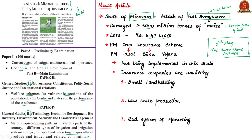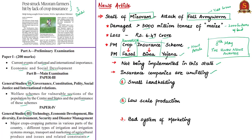Today we shall focus on Pradhan Mantri Fasal Bima Yojana. The farmers of Mizoram have not been covered under the Prime Minister crop insurance scheme. Had they been covered, they would have been able to mitigate their financial risks. In Hindi, 'Fasal' means harvesting of crops and 'Bima' means insurance. The article states that the scheme is not being implemented in Mizoram since insurance companies are unwilling to participate for the state. The reasons for this are: first, because of small land holdings; second, because of low-scale production by farmers; and finally, because of a bad system of marketing.